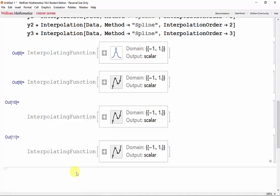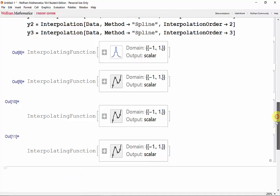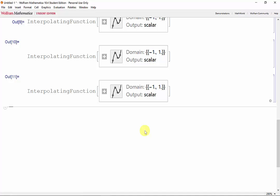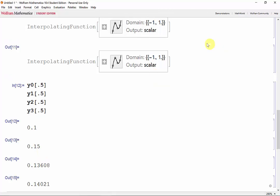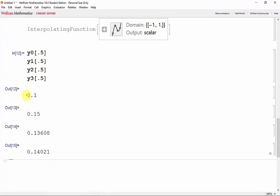Instead, we need to use square brackets. So let's try and evaluate them all at 0.5. Once again, I'll copy and paste this to save some time. Now shift enter, and we get each of our values. And we notice that they're all slightly different depending on the interpolation order.